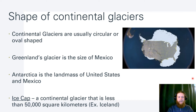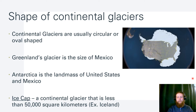When we talk about smaller continental glaciers like Iceland — which does have a glacier — these are called ice caps. They are less than 50,000 square kilometers. They are still continental glaciers, just smaller ones.